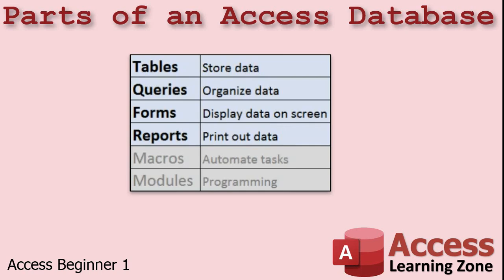Tables are used to store data. All of the data in your Access database will be stored in one or more tables. Queries are generally used to organize data. Forms are used to display data on the screen and to edit that data. Reports are for printing out data or formatting information for the printed page. Optionally, for more advanced users, macros are used to automate tasks and modules give you the full Visual Basic programming language inside your Access database.